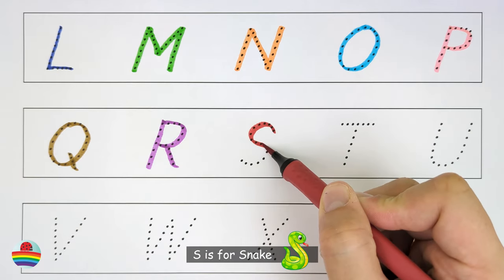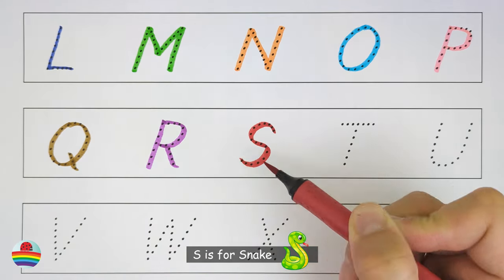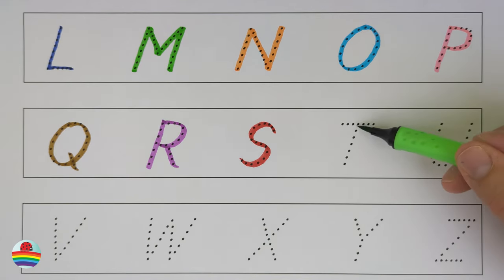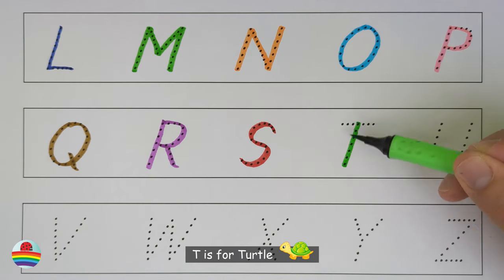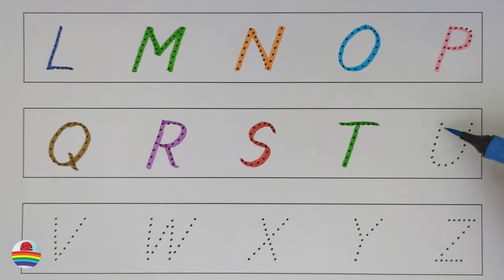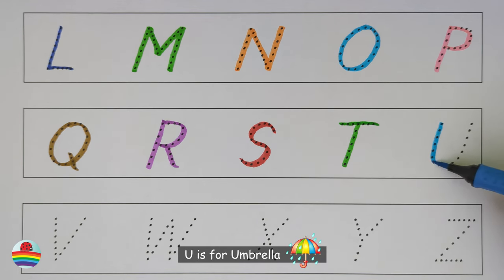S. S is for Snake. S. T. T is for Turtle. T. U. U is for Umbrella. U.